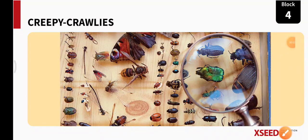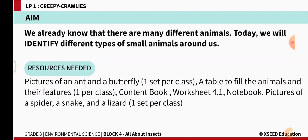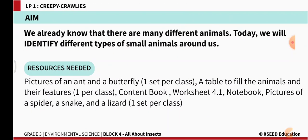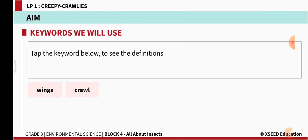Namaste students, welcome to our EBS class. In today's class we are going to learn about creepy crawlies. This is block 4.1 — we are going to learn about the small animals around us. We will identify different types of small animals that crawl or fly.